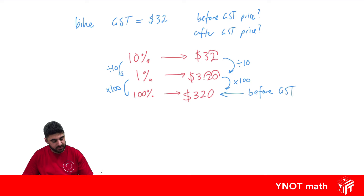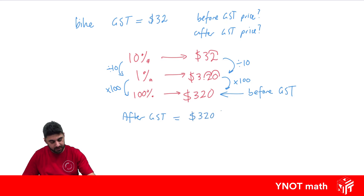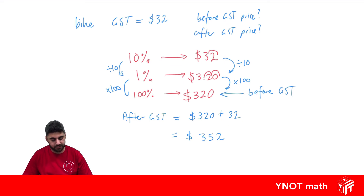To get the price after GST, we just take our price before GST and add on the GST. Here we'll get $352, and that's the price we'd have to pay for the bike.